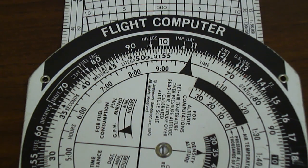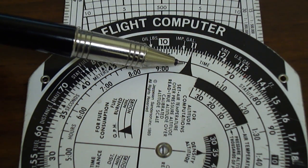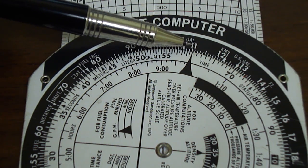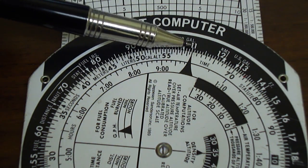The first thing we'll do is line up the index on the inside rotating card to the airspeed on the outside stationary scale. This will be 110 knots or the number 11.